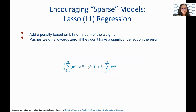Sparse models such as L1 lasso regression have an objective to minimize the cost function by finding the optimal values for the coefficients w. The result of this optimization is a sparse model, where some coefficients are exactly equal to zero, indicating that the corresponding features are not contributing to the prediction. In the equation, x(i) is the predicted value of the i-th sample, y(i) is the actual value, and n is the number of samples.